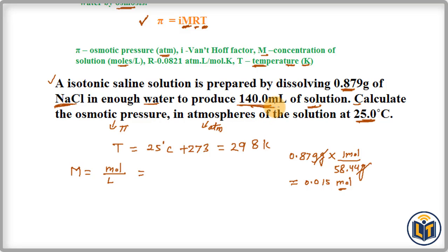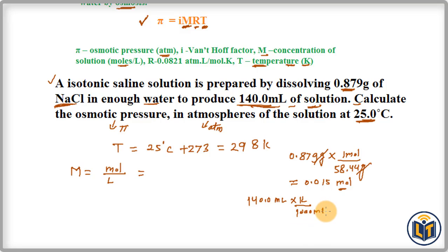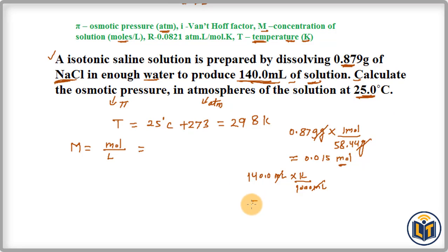Next, we convert the volume of solution from milliliters to liters. We have 140.0 mL. Since 1 liter = 1000 mL, dividing gives us 0.140 liters.